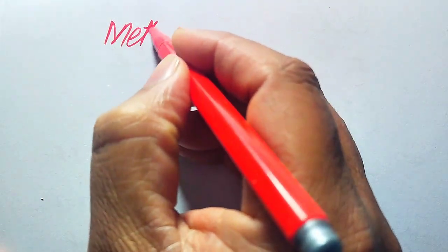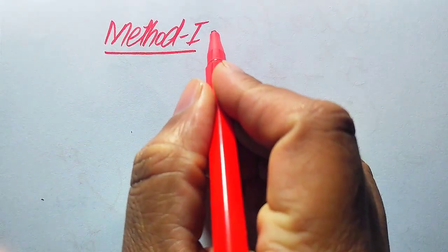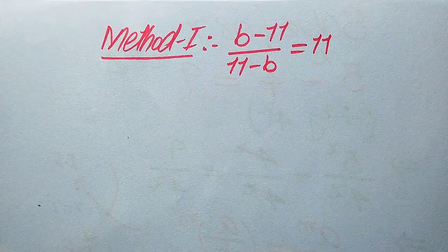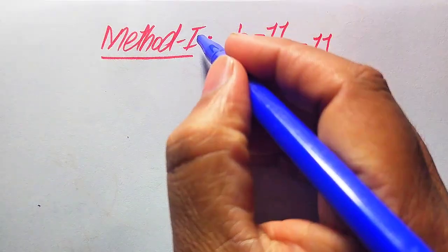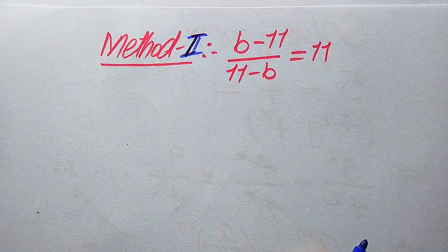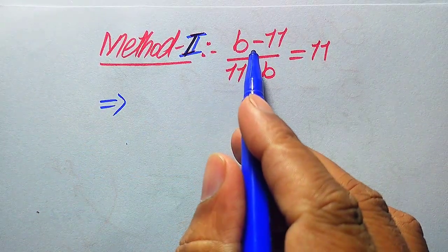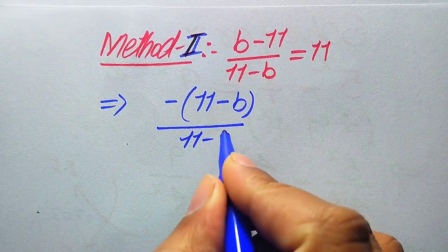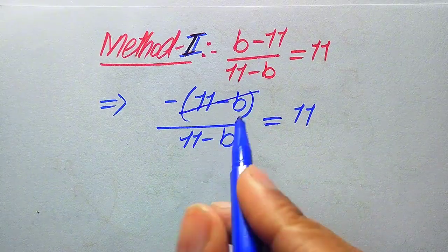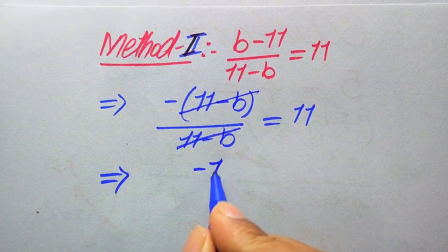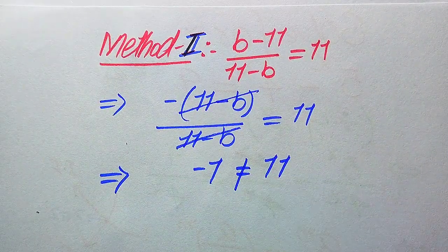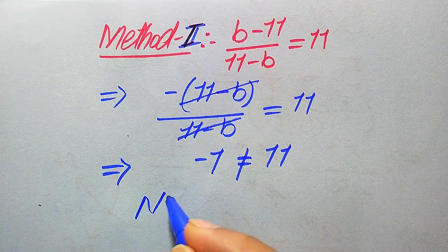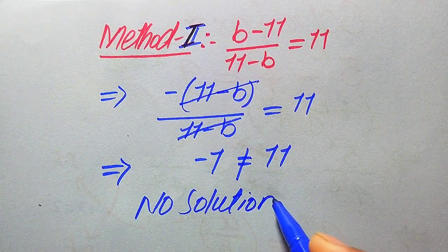Now we solve the problem using the second method. The given equation is (b minus 11) divided by (11 minus b) equals 11. We factor a negative sign out of the numerator: negative (11 minus b) divided by (11 minus b) equals 11. The (11 minus b) terms cancel, giving minus 1 equals 11, which is impossible. Therefore this equation has no solution.